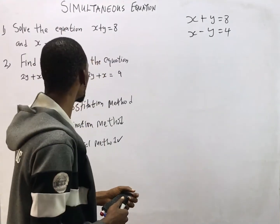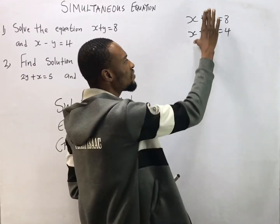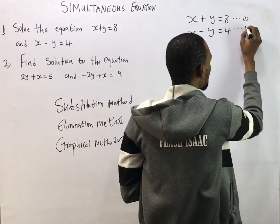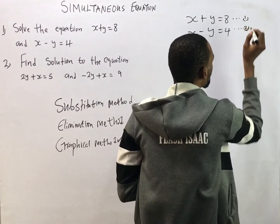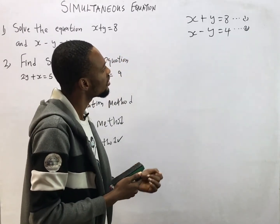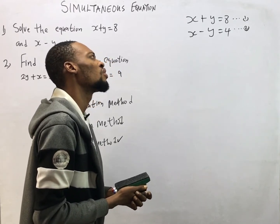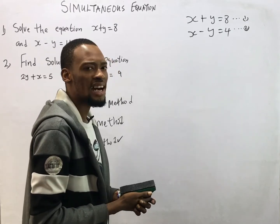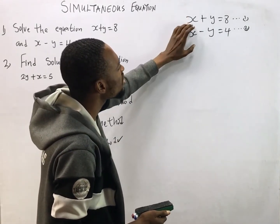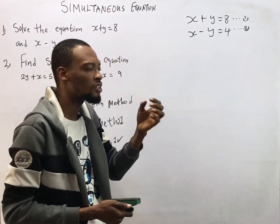To solve simultaneous equations using substitution method, this is what you do. We are given these equations — take this as equation one and take this as equation two. The unknowns are s and y, so between equation one and two, make a choice of which one to use first.